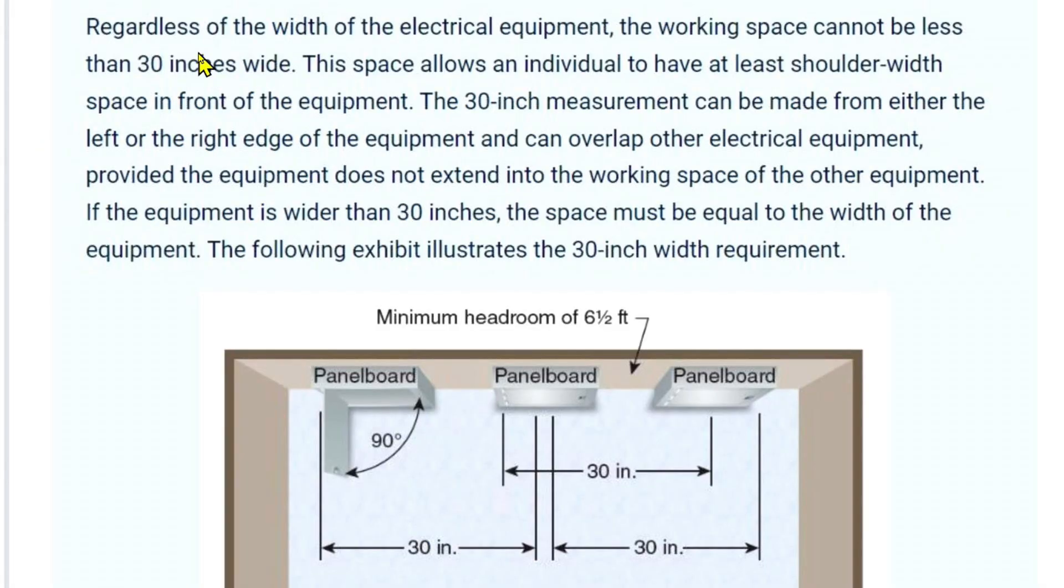This is from the 2023 NEC handbook. Regardless of the width of the electrical equipment, the working space cannot be less than 30 inches wide. This space allows an individual to have at least shoulder width space in front of the equipment. The 30 inch measurement can be made from either the left or the right edge of the equipment.